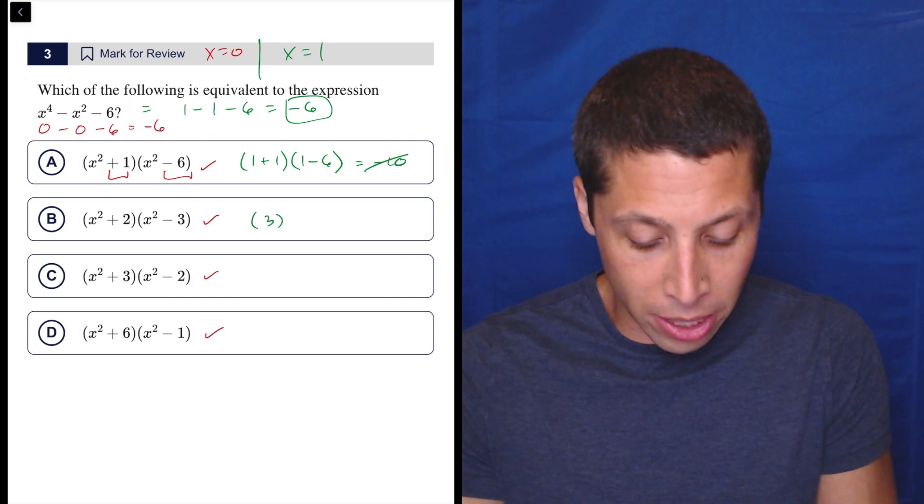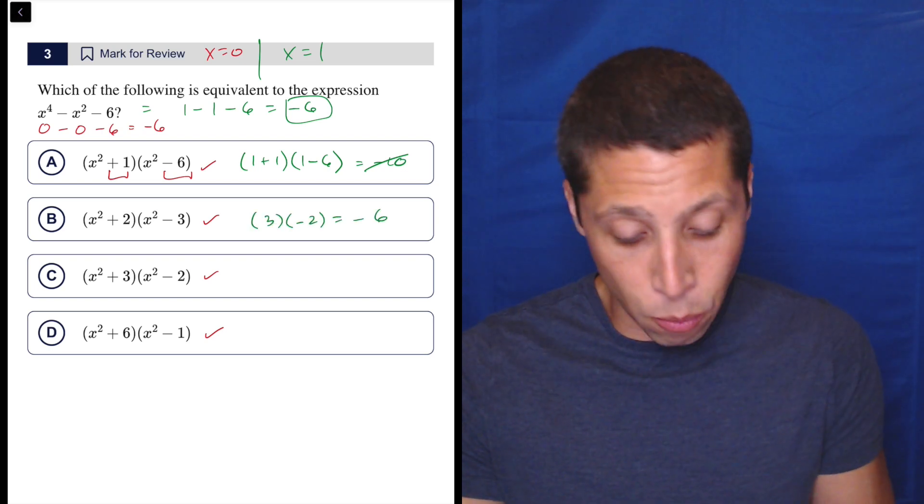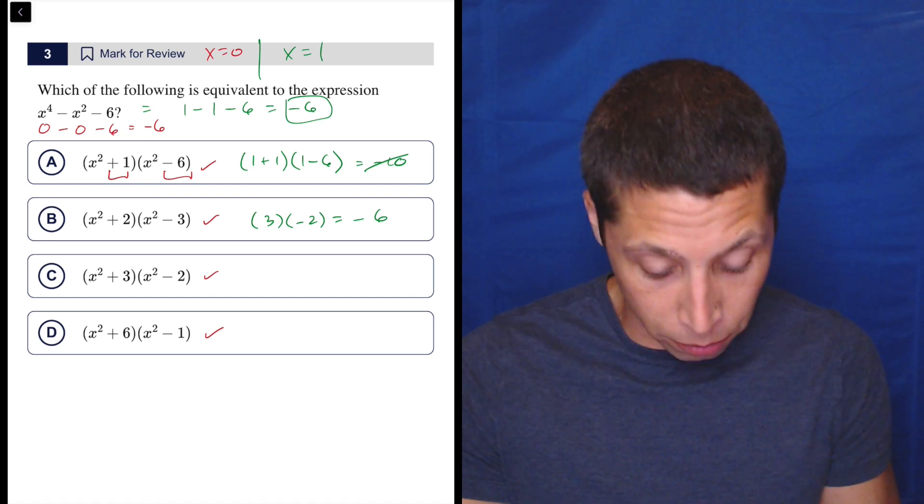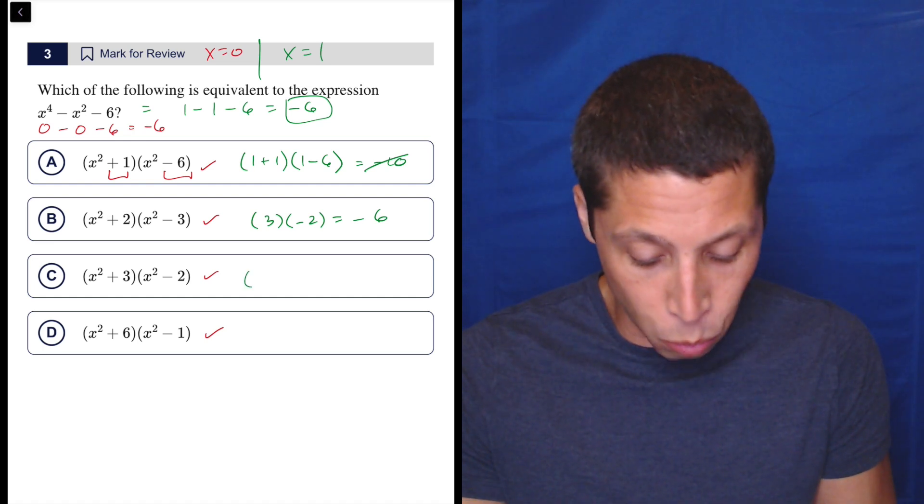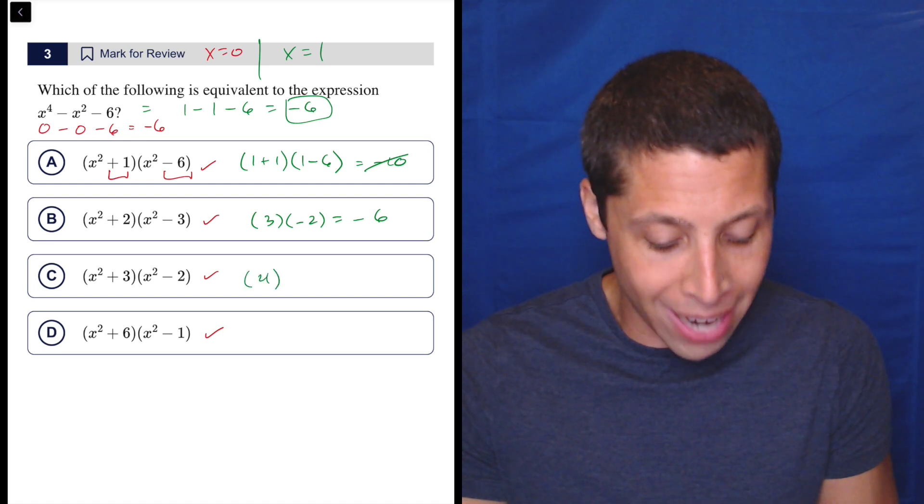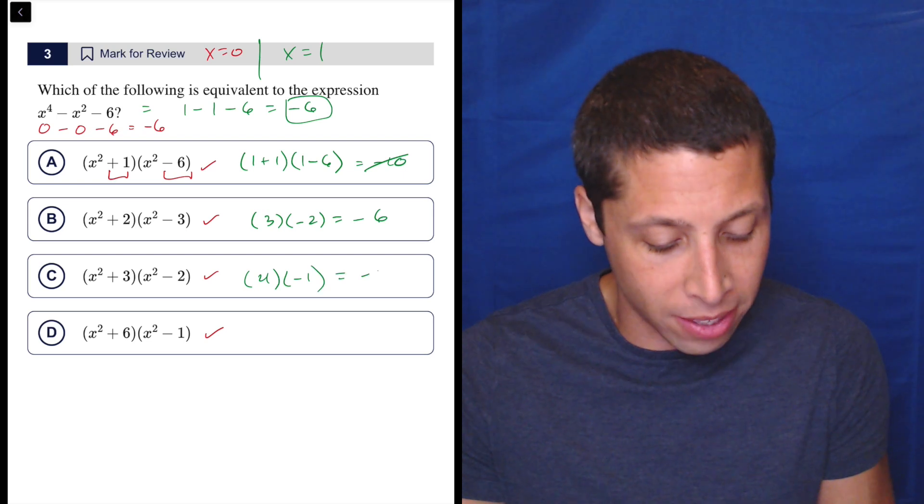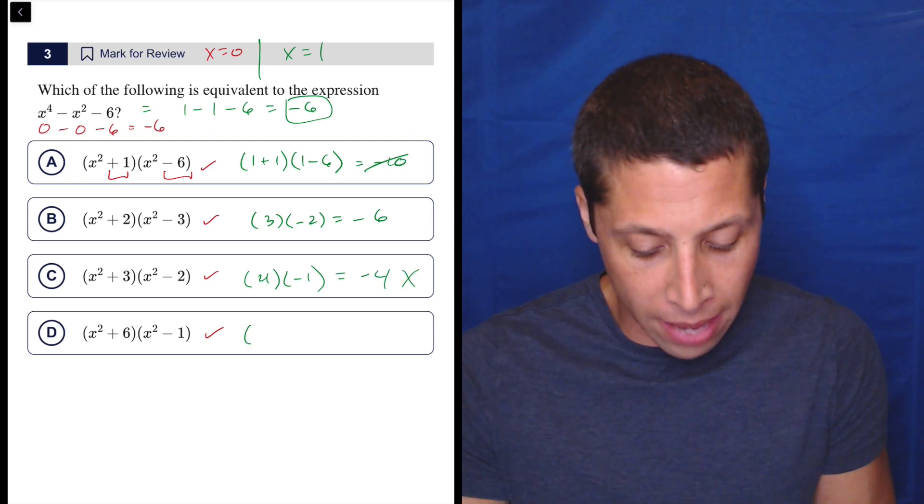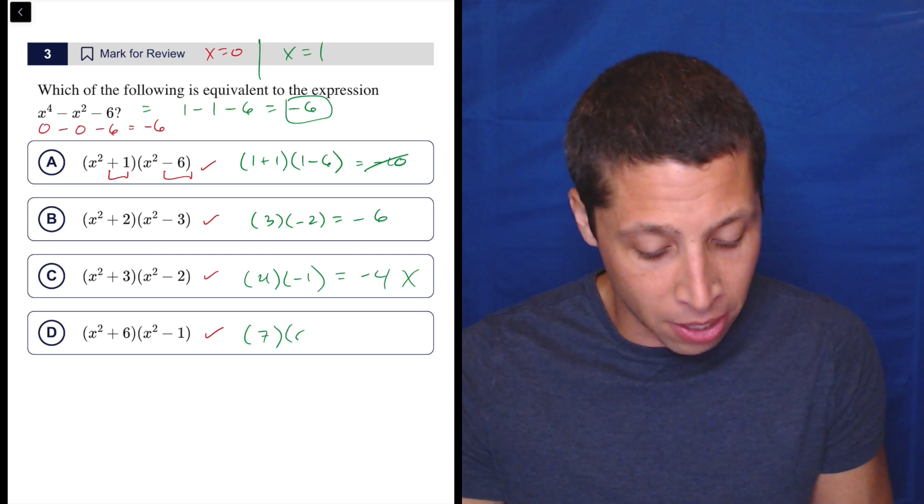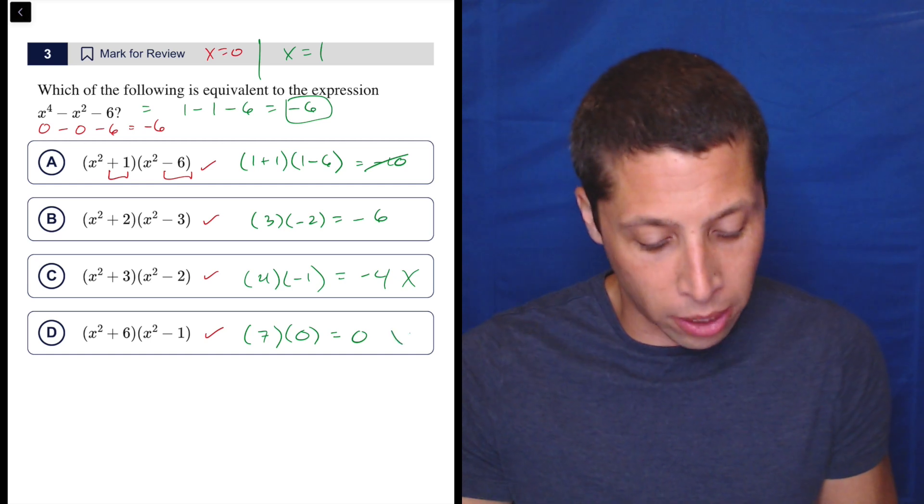So that works. But we're not done. We've got to make sure with everything. This one is going to be one plus three is four. One minus two is negative one, so that's negative four. That doesn't work. And this is going to be seven times zero. So that doesn't work either.